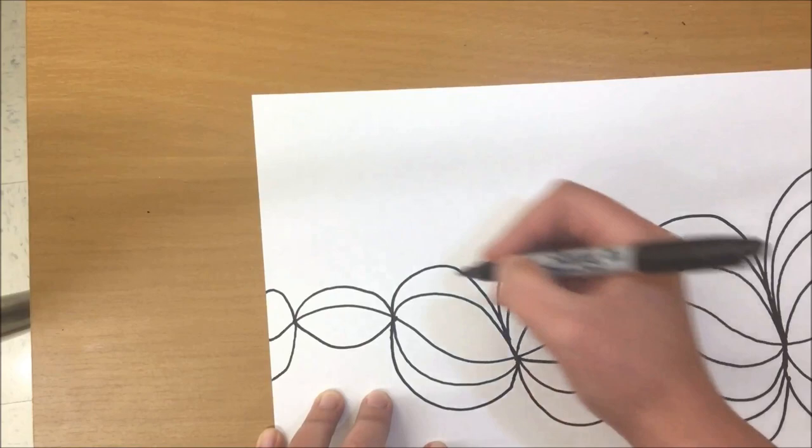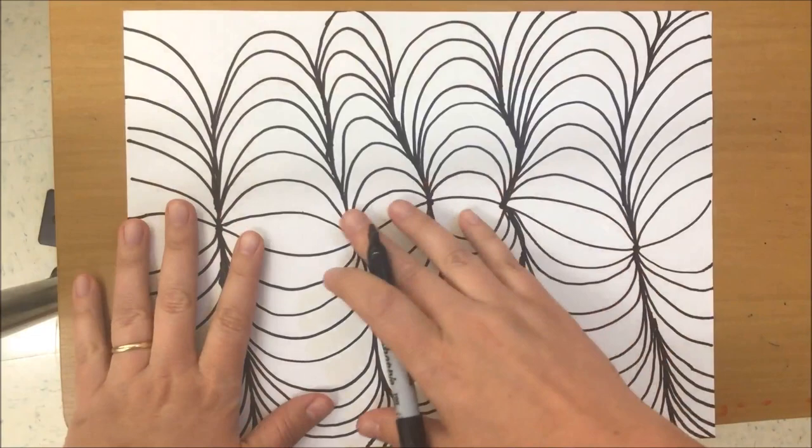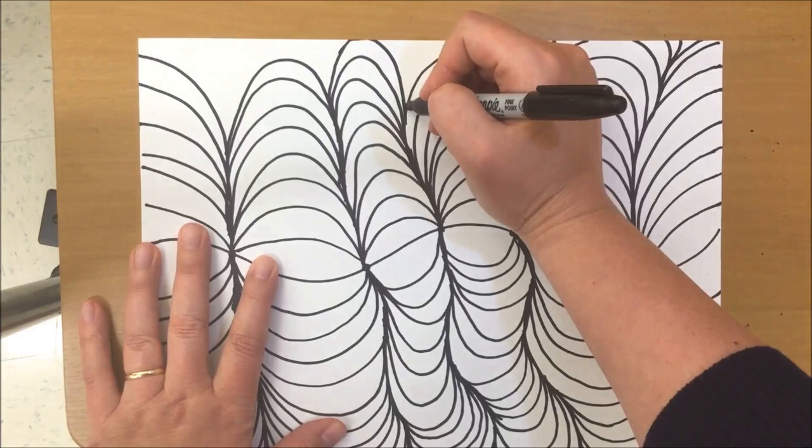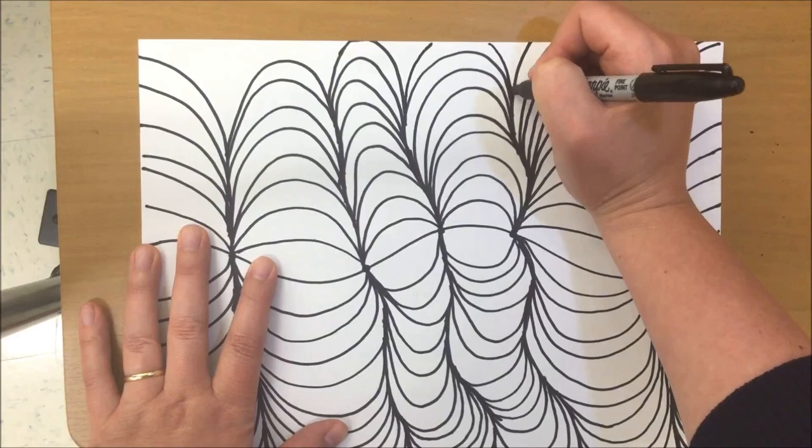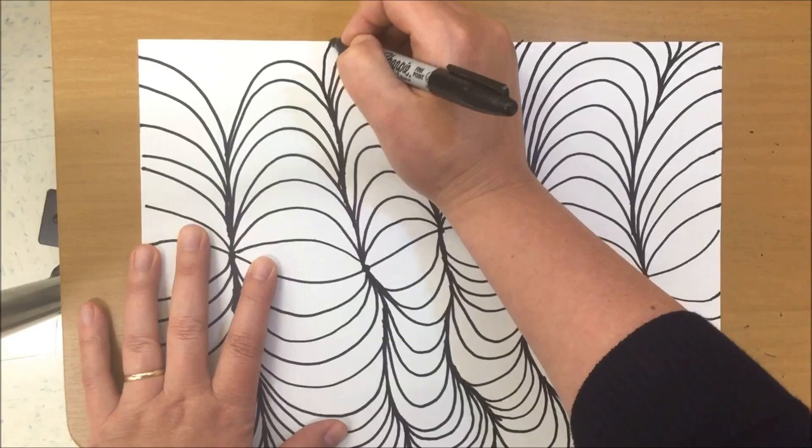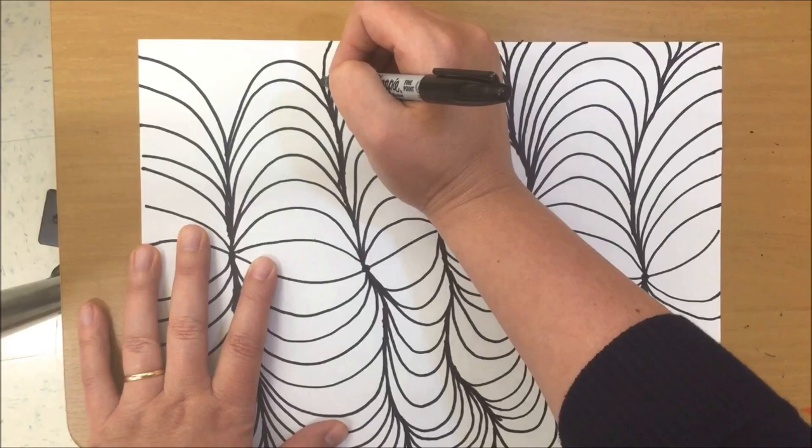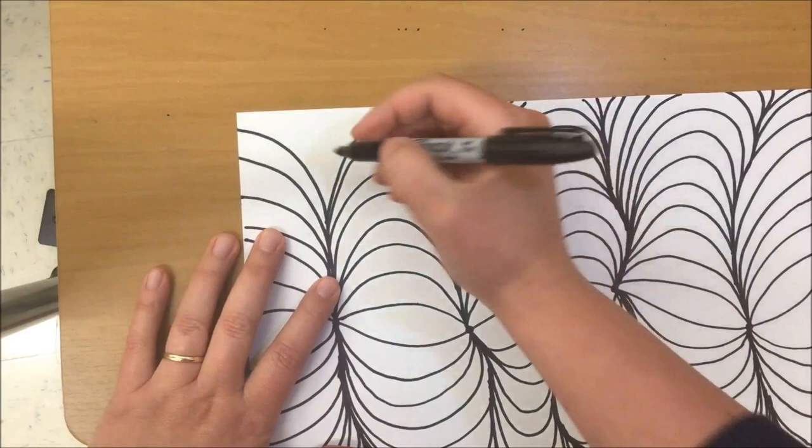You're going to keep going until you have filled the page. When you start to get close to the edge of the page, you're going to have your tunnels come right off the page. It's going to look like an optical illusion, like it just goes on and on forever. Just keep making those lines. Going back to the crease every time. You want to make sure you're going back to that crease every time.